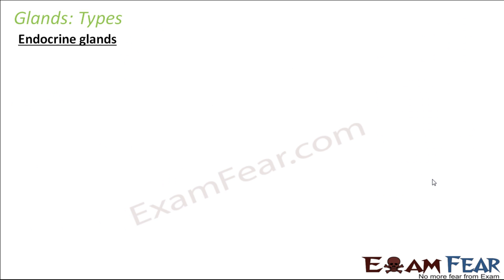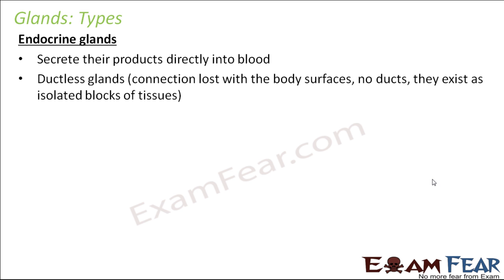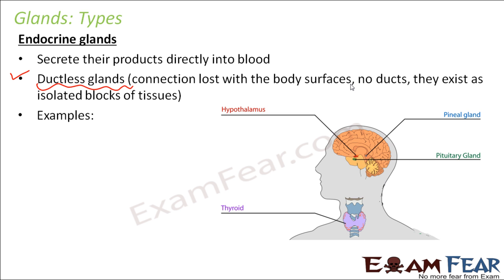The other type of glands are endocrine glands — glands without ducts. They do not have any tube-like structure, so they directly release their secretion into the blood. You do not see their secretion on the surface; it goes into the blood and the blood carries it to different parts of the body. They are called ductless glands. They exist as isolated blocks of tissue with no tube-like structure — just a lump of tissue — and they secrete directly into the bloodstream. Examples include the thyroid gland, pituitary gland, hypothalamus, and pineal gland.